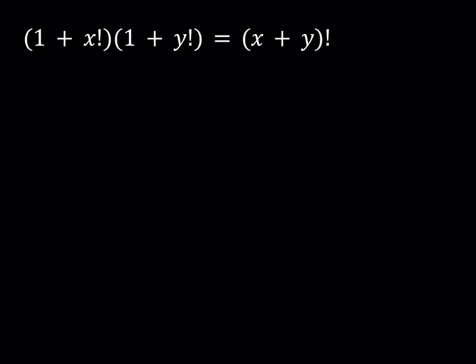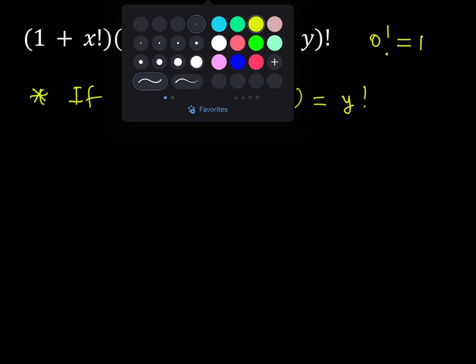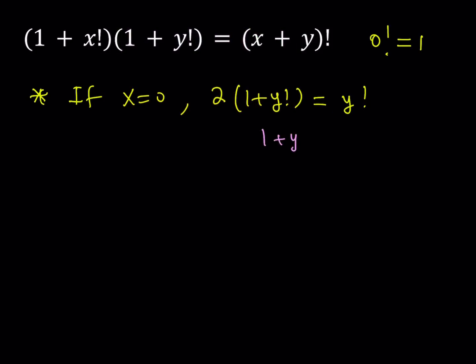Let's take a look at some special cases first. What happens if x is equal to 0? Let's replace x with 0, and remember that 0! = 1, not 0. So you get 1 + 1 = 2, times (1 + y)!, equals y!. Now (1 + y)! is already larger than y!, and when you multiply by 2 it gets even bigger. So if x = 0, we do not get any solutions.